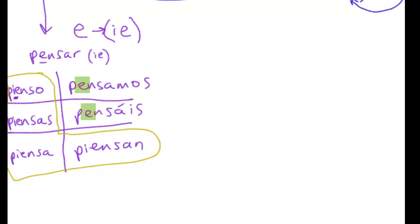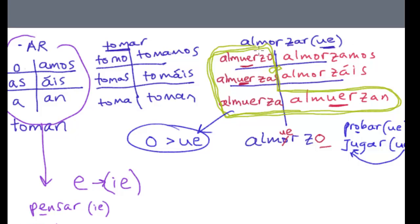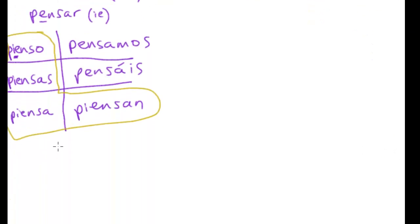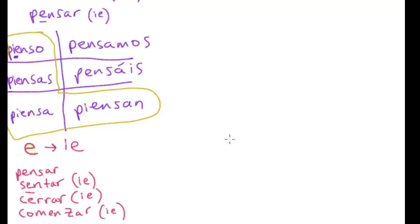You can see which forms do change—all of these forms change their E to IE, and these two forms did not. Their stem stays the same, just as with the verb almorzar. Other verbs that do this and are -ar verbs would be sentar (to sit), cerrar (to close), and certainly comenzar and también empezar (to start or begin).